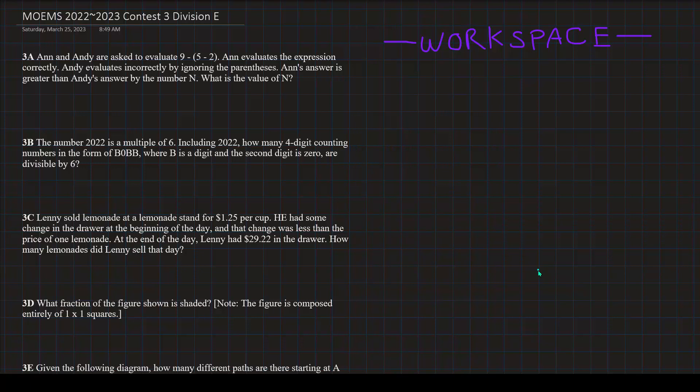So here it's asking us to find the value of a number. And this number is the difference between Ann's answer and Andy's answer. In order to find n, our first step is to find what Ann and Andy each got, right?